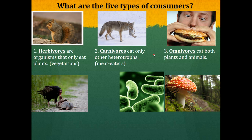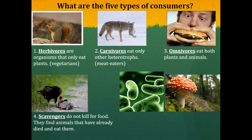The third type of consumer is an omnivore. Omnivores can eat both plants and animals — this is where humans are. Humans are designed to eat plants and animals; again, vegetarianism is a lifestyle choice, but humans are designed to be omnivores. The fourth type of consumer is a scavenger. Scavengers do not kill for their food; they eat animals that have already died. Our example is a vulture — this vulture found a dead armadillo and got itself a meal.